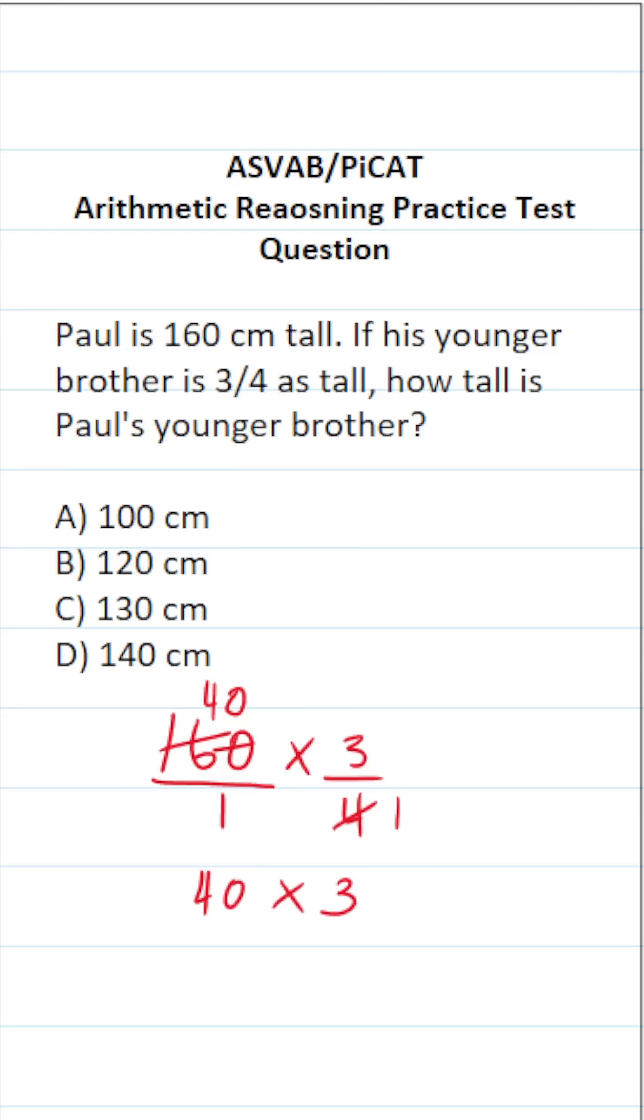Again, 4 times 3 would be 12. Therefore, 40 times 3 is going to be 120. So in other words, Paul's younger brother is B, 120 centimeters tall.